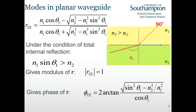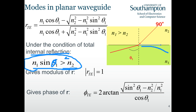After the critical angle we have only reflection — there is no transmission anymore. The critical angle happens when equality holds, and then all angles bigger than the critical angle lead to this parameter becoming a complex value.